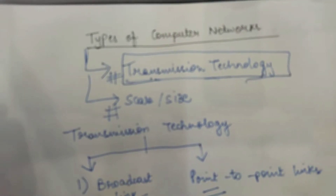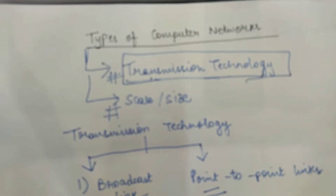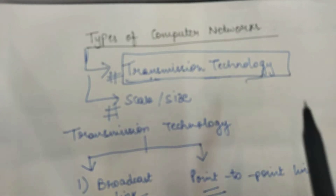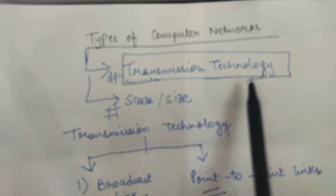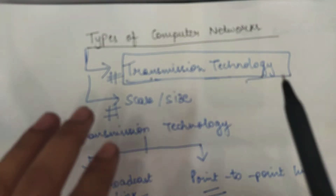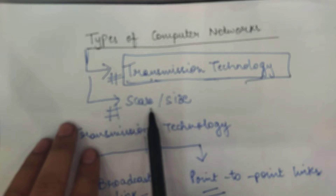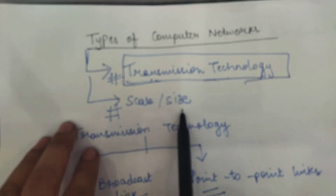Hello all the students. Today we are going to study the different types of computer networks and we will see how we can classify a computer network — what are the criteria for classifying a computer network. Broadly speaking, there are two ways in which we can classify a computer network: one is using the transmission technology and the other is using the scale or size of the network.